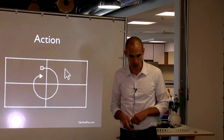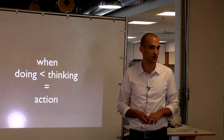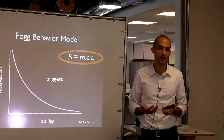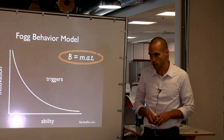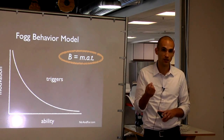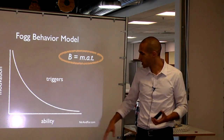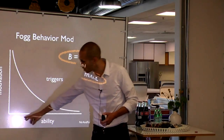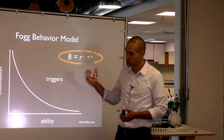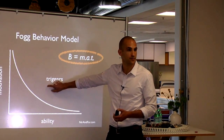Next is the action phase — action is all about when doing is easier than thinking. BJ Fogg at Stanford posits that for any behavior to occur, you need three things at the same time: motivation, ability, and a trigger. Motivation is the reason we do something. Ability is how difficult something is. A trigger is the cue. If you have sufficient motivation, something is easy enough, and a trigger is present, you will get a behavior every single time. That's B equals MAT.